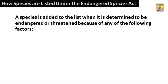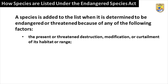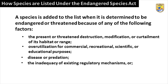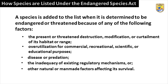A species is added to the list when it is determined to be endangered or threatened because of any of the following factors: the present or threatened destruction, modification, or curtailment of its habitat or range; over-utilization for commercial, recreational, scientific, or educational purposes; disease or predation; the inadequacy of existing regulatory mechanisms; or other natural or man-made factors affecting its survival.